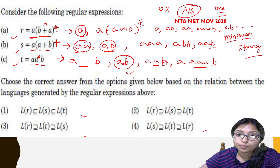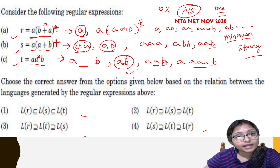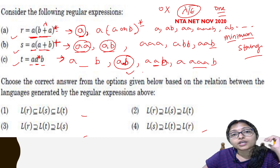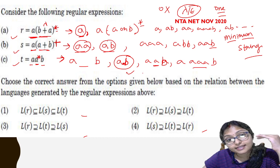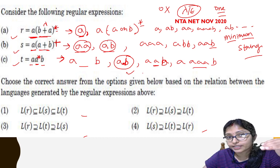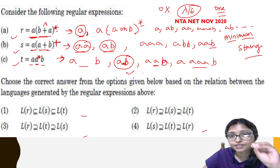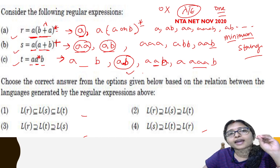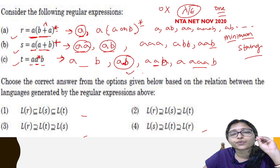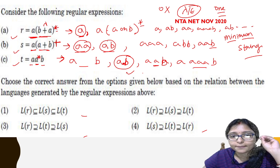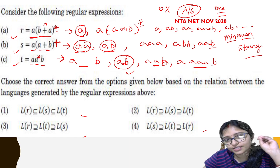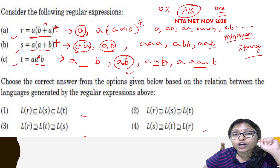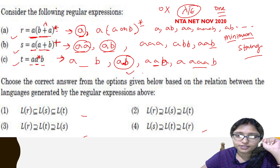The minimum string is AB — starting with A, ending with B. Now I think you can do it. Pause the video and try to understand: can you solve the question or not?